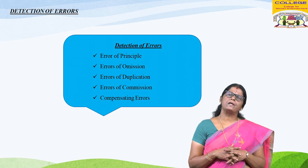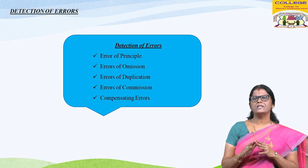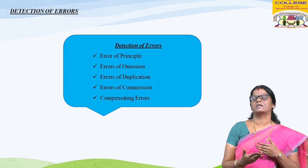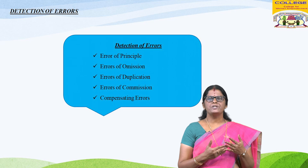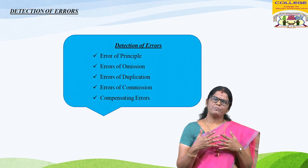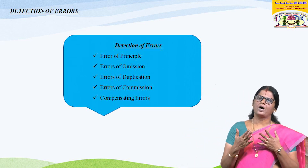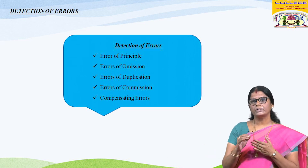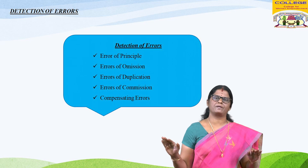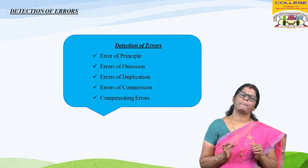Errors of omission: there may be two types. First, where a transaction is totally omitted from the books of accounts — it will not affect the trial balance and detection is difficult. Examples include omission of a purchase or sale from the purchase day book or sales day book, and omission of outstanding or unpaid expenses. Second, transactions which are partially omitted, such as when totals of the purchase day book or sales day book are omitted from being posted to the purchase or sales account, or payment/receipt transactions omitted from the ledger account.